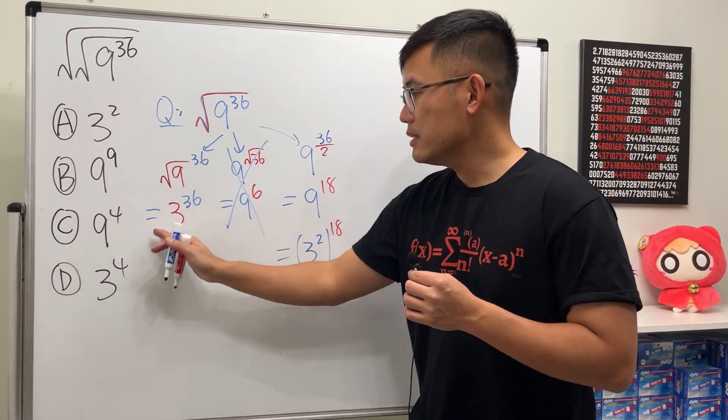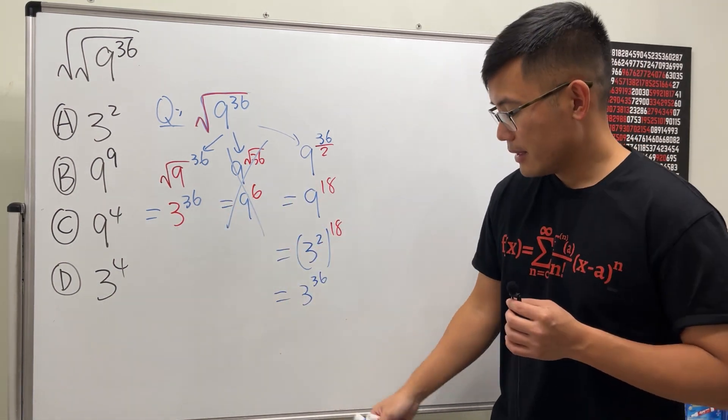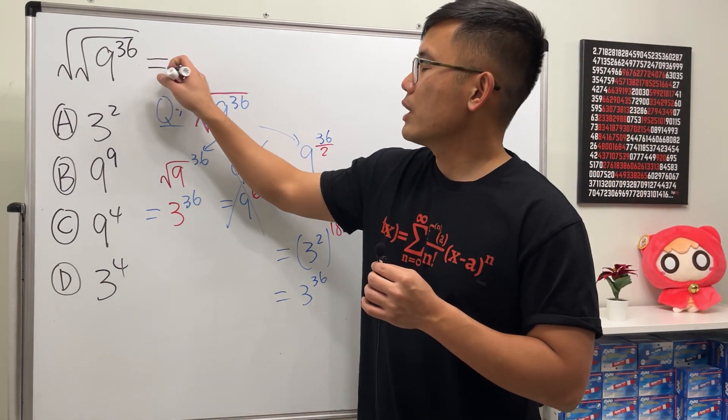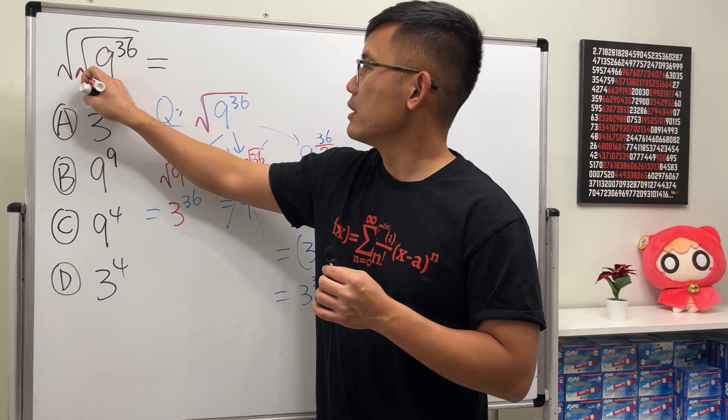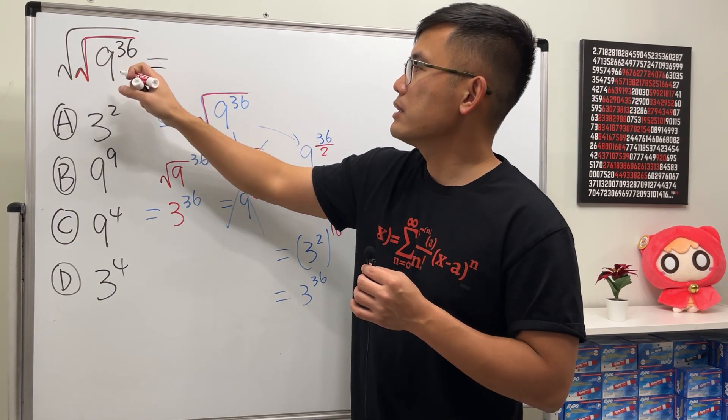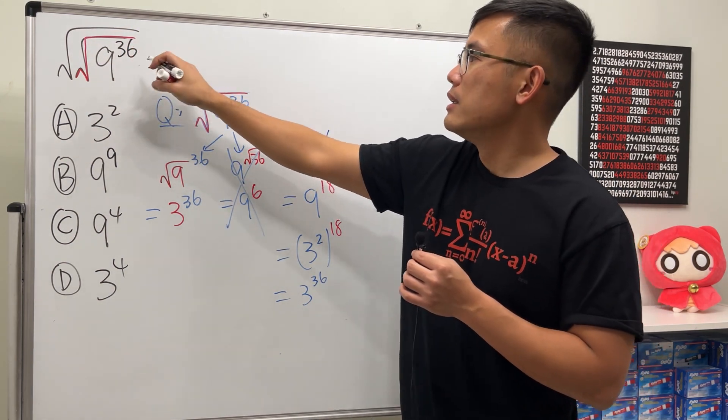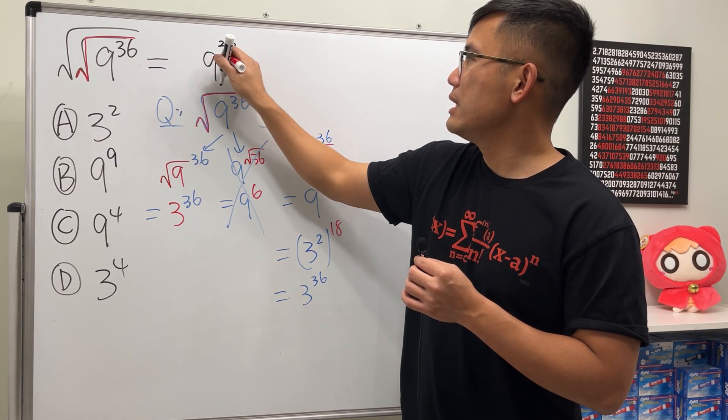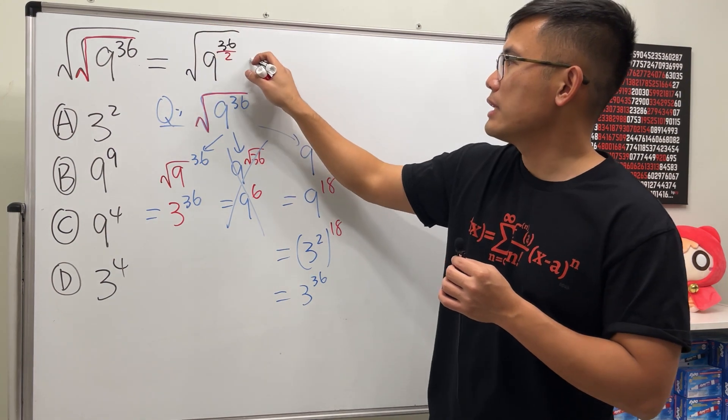So either this or this. All right, so let's go back to the equation. We will just go ahead and do this inside out. This first square root tells us to divide the power by 2, right? So we have 9 raised to the 36 divided by 2 power, like this. And then we still have a square root on the outside.